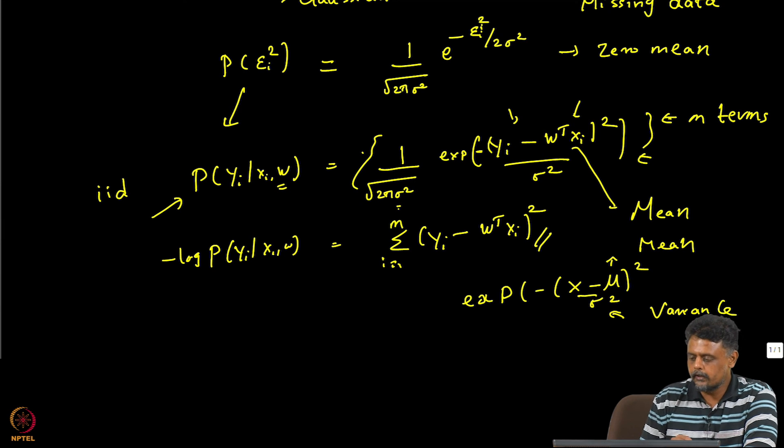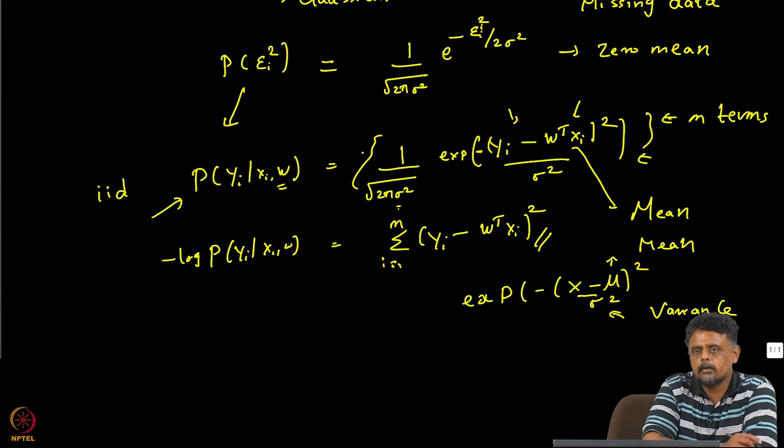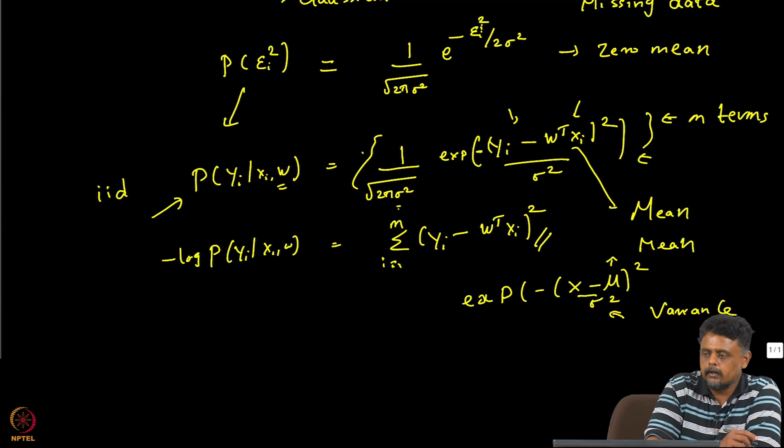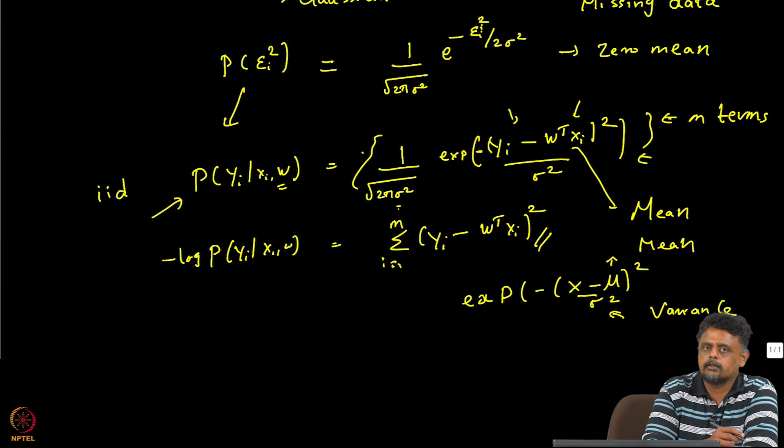Of course we can also show that for classification problems, at least for the 2 class classification problems, if you start off with the Bernoulli distribution, we can end up with the log loss or the binary cross-entropy loss function, which is pretty much the same way. We can do that pretty much the same way.